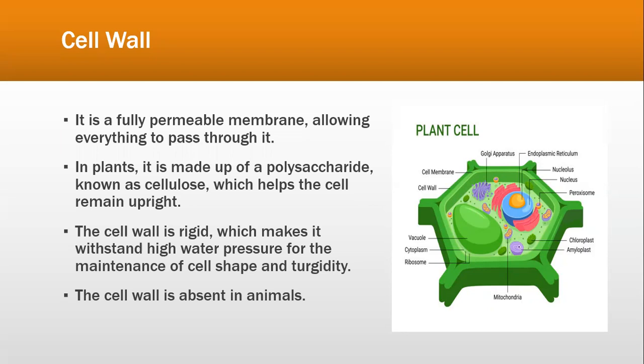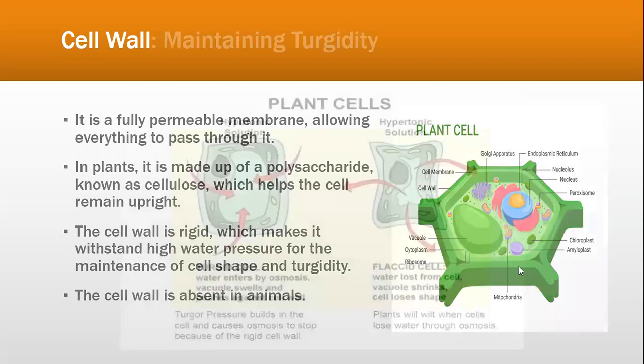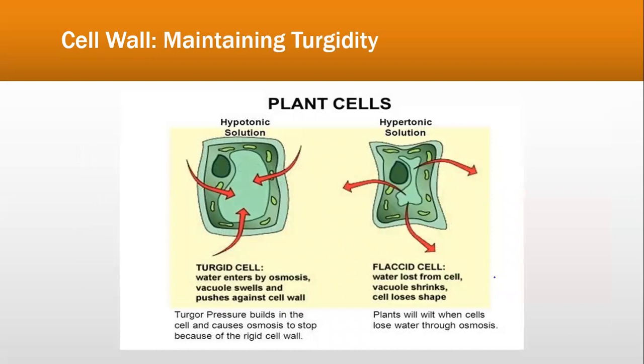We'll be talking about osmosis in the next chapter — chapter five — where we'll discuss the concept of the cell wall again: how in plants it maintains turgidity when a cell is placed in a hypotonic solution with a lower concentration, and when the plant cell is placed in a hypotonic solution with a higher concentration. While the cell wall has no overall control over exit, it is basically the cell membrane that controls everything. Water enters by osmosis and the cell wall keeps the cell protected so that it does not burst.